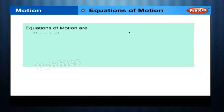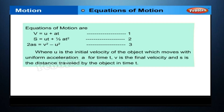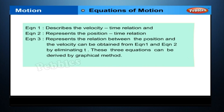Equations of Motion. The three equations of motion are: (1) V = U + AT, (2) S = UT + ½AT², and (3) 2AS = V² − U², where U is the initial velocity of the object moving with uniform acceleration A for time t, V is the final velocity, and S is the distance travelled. Equation 1 describes the velocity-time relation, equation 2 the position-time relation, and equation 3 the relation between position and velocity obtained by eliminating t from equations 1 and 2. These three equations can be derived by graphical method.